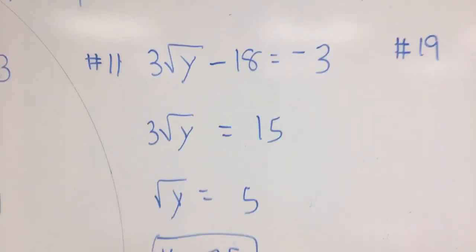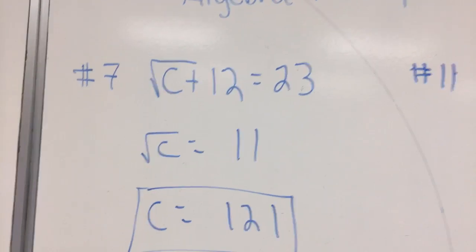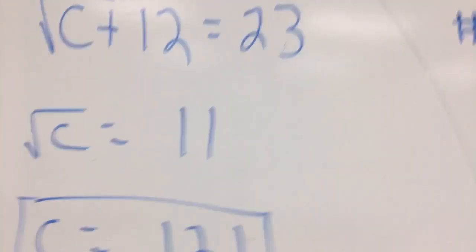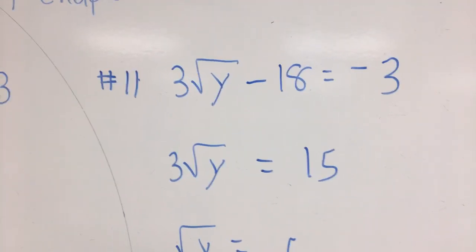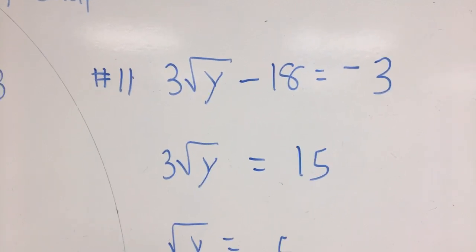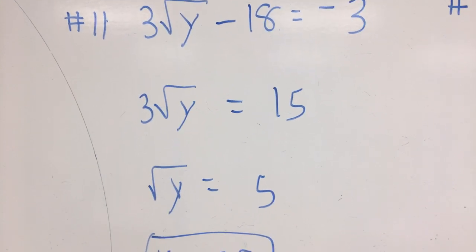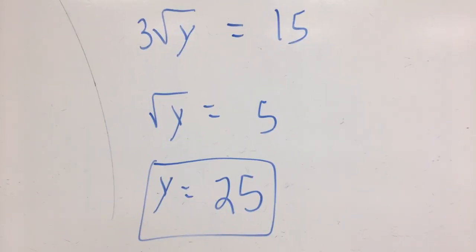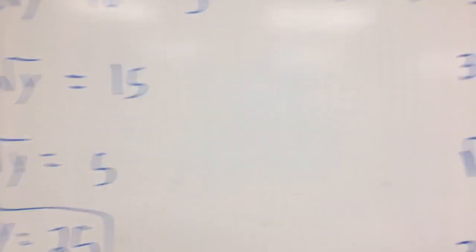Number 11. Now the whole trick to these problems is you've got to get the radical by itself. Notice in number 7, once we got to this point here, all we do is square both sides, and we had an answer. Same drill over here on number 11. The 18's got to go. Add 18 to both sides. And then the 3, that's 3 times the square root of Y. So I'm going to divide by 3. Now the square root of Y is equal to 5. Now once again, you square both sides. The square root of Y squared is Y, and 5 squared is 25.